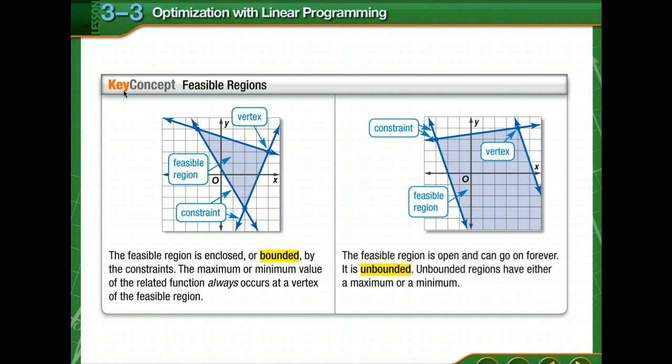So let's see what that means. The feasible region is the area that's enclosed by the polygon. It's bounded because it is enclosed by all three of these inequalities. The maximum or minimum value of the related function always occurs at a vertex of the feasible region. At times, not all three intersect. This is called unbounded. Unbounded regions have either a maximum or a minimum. It does not have both.